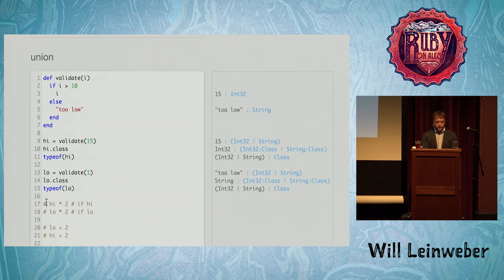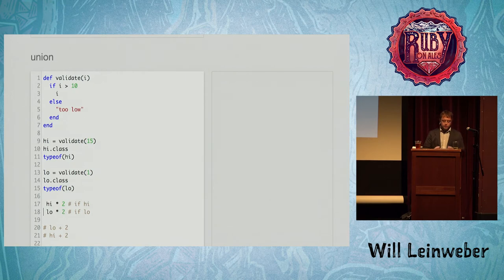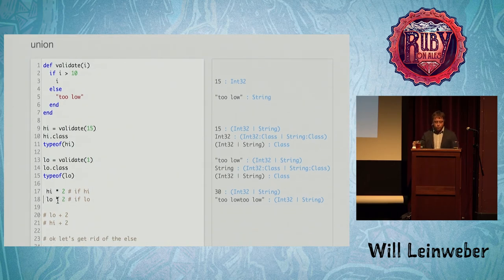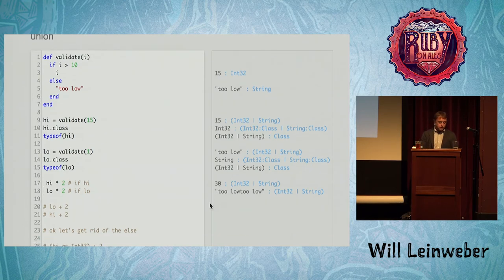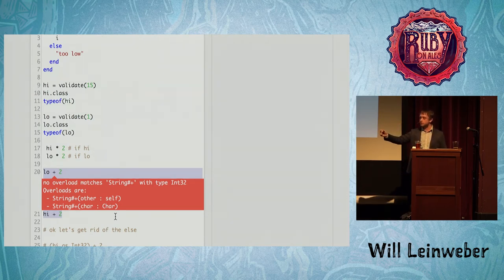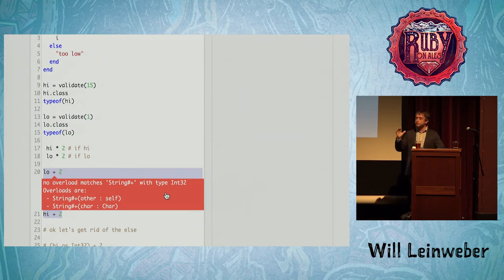So what happens when you have a union type? As we saw, both Integer and String implement the times method. So we can multiply by two and get 30, or multiply a string by two and get it repeated twice. If, however, we try to use plus, things start to go wrong. What's happening is any methods you call downstream have to be on every member of the union type. While there is a plus on String, there isn't one that is plus with Int32 as the argument. So this program fails to compile — it's a compile-time error.